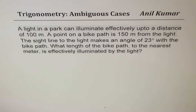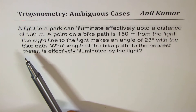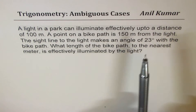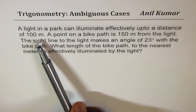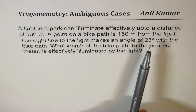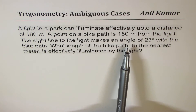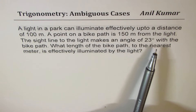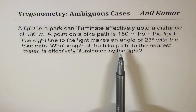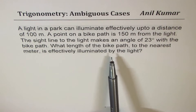The application question on sine law, which may lead to an ambiguous case, is right here. The question is: a light in a park can illuminate effectively up to a distance of 100 meters. A point on the bike path is 150 meters from the light. The sight line to the light makes an angle of 23 degrees with the bike path. What length of the bike path to the nearest meter is effectively illuminated by the light?